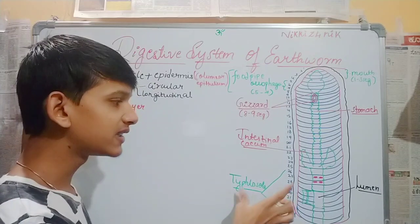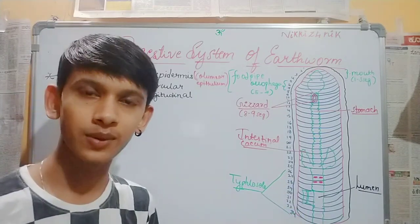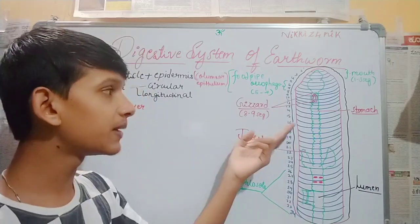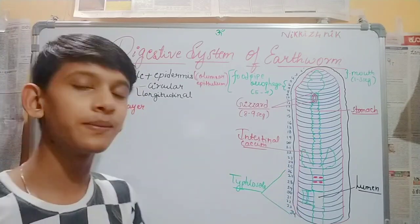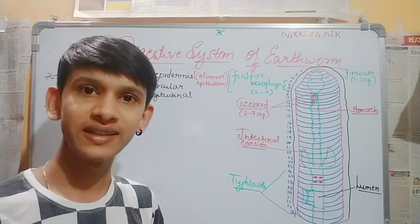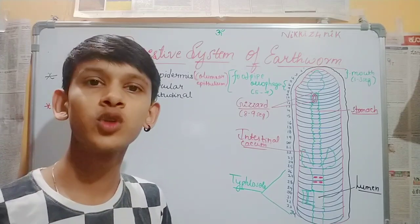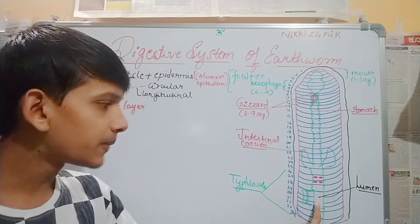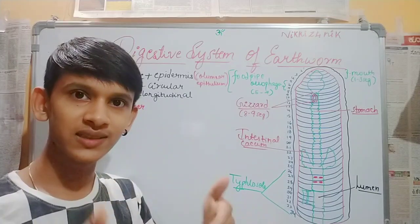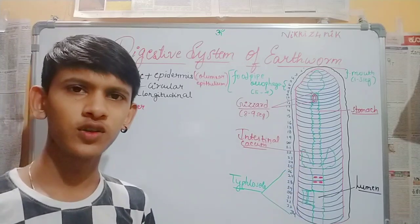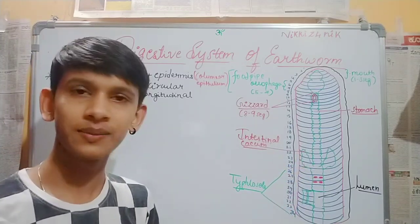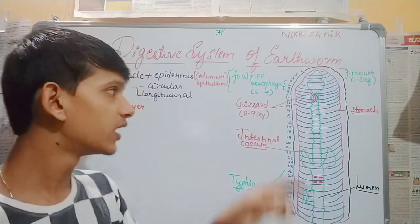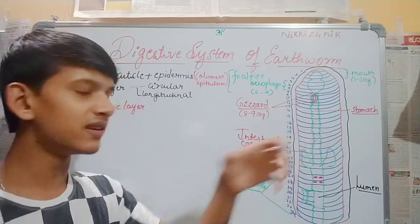At 26th to 34 or 35 segments, the intestine continues. In this intestine, we have Typhlosolar regions. The intestine is highly folded so that more amount of food is absorbed. This is the general reason. The lumen has smooth muscles.